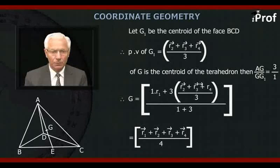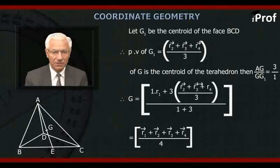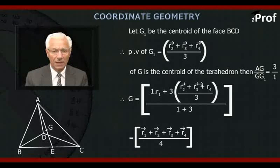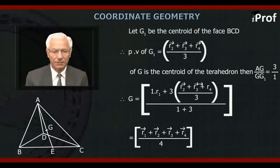Therefore, position vector of G1 is R2 plus R3 plus R4 divided by three. If G is the centroid of the tetrahedron, then AG upon GG1 is equal to three to one. That is, AG divides AG1 in the ratio of three is to one. G is represented by one into R1 plus three into R2 plus R3 plus R4 by three divided by one plus three, which gives us R1 plus R2 plus R3 plus R4 divided by four.